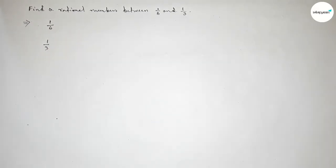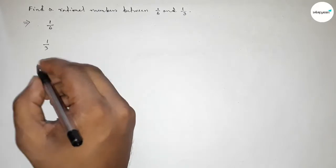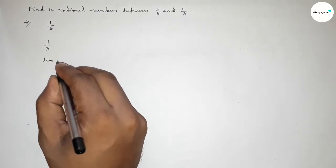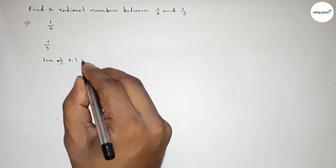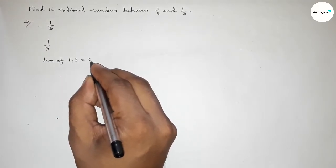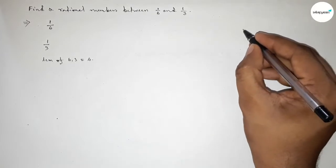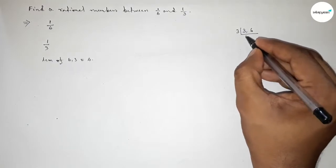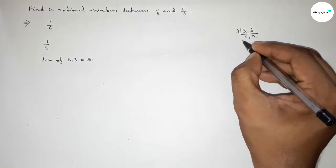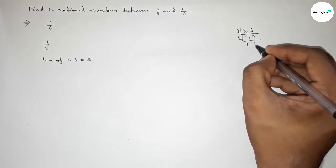So now finding the LCM of 6 and 3. The LCM equals 6. Now first factorizing this: first dividing by 3, then dividing by 2. Now taking the multiplication, so obviously 6.